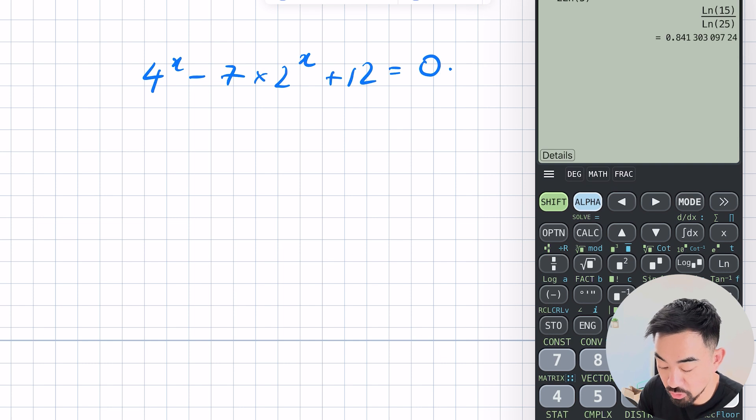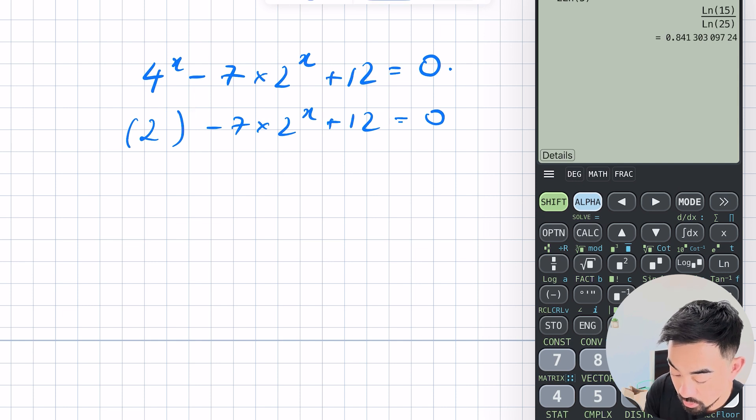Alright last example today. So here you've got 4 to the power of x minus 7 times 2 to the power of x plus 12 equals 0. Now for these examples here although they look hard it's actually just a quadratic that's kind of hidden amongst these exponents and powers. So what you want to do is you've got to recognize that 4 is a power of 2. So this can be written as 2 to the power of 2 to the power of x. And I can actually switch the 2 and the x around so that's going to make it a bit easier to see.